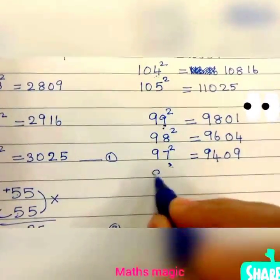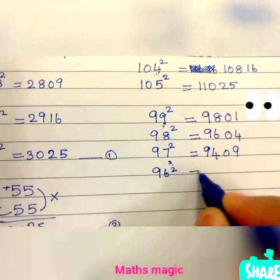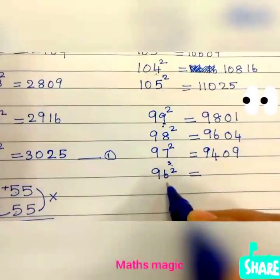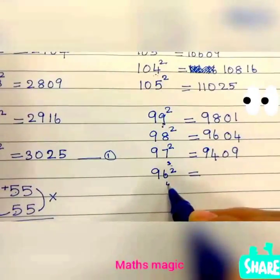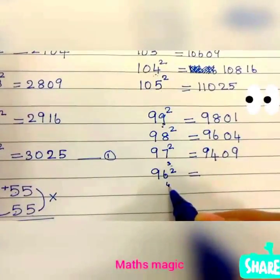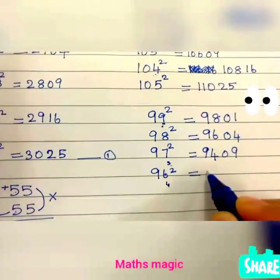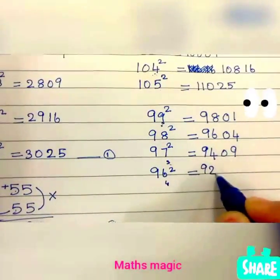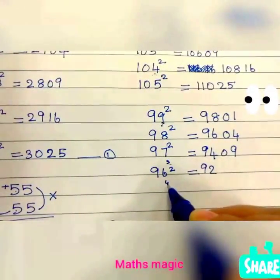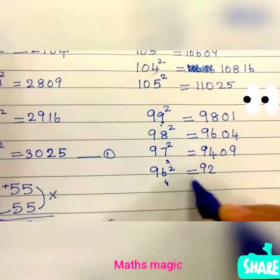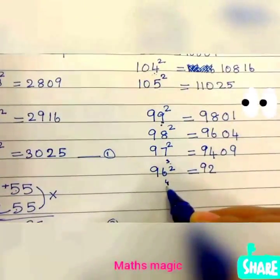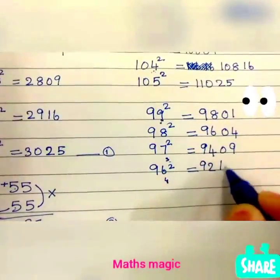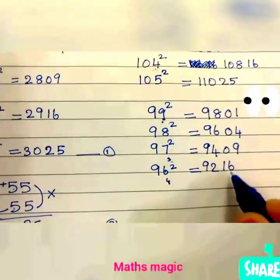For 96 squared: 100 minus 96 is 4, so we subtract double 4 from 100. 100 minus 8 is 92. We subtracted 4 from 100, so 4 squared is 16. So 96 squared is 9216.